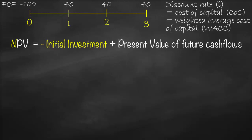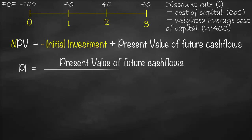So instead of subtracting initial investment from present value of future cash flows, can we divide them? Yes, we can. Therefore, this is our next capital budgeting tool, which is called profitability index. Profitability index is equal to present value of future cash flows divided by our initial investment. And since here we divide by initial investment, our benchmark will be one, which means if profitability index is bigger than one, we'll accept the project. If profitability index is equal to one, we will be indifferent. If profitability index is lower than one, we will reject the project.